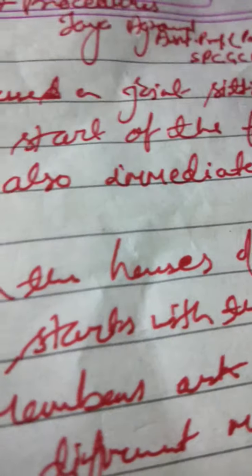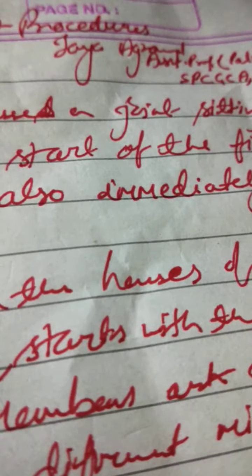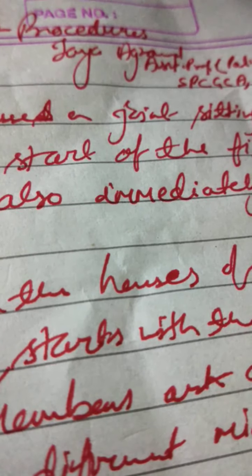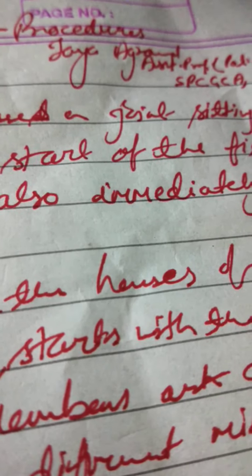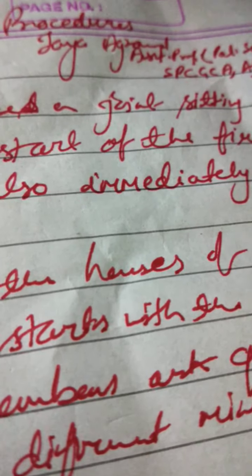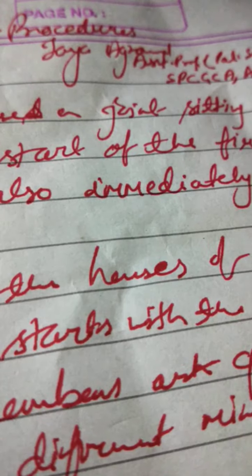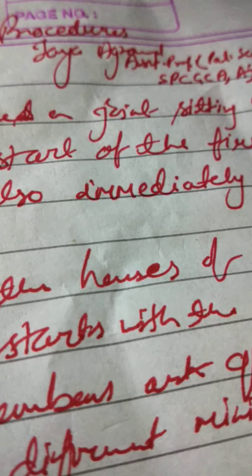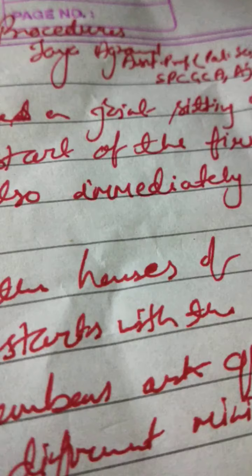The normal legislative business starts with the introduction of a bill in the house. The minister asks for leave of the house to move or present the bill, and when it is granted, states the contents of the bill and presents it for further discussion — this constitutes the first reading. A member other than a minister has to give a notice of intention to introduce the bill before asking for leave of the house. After introduction, the bill may be referred to a select committee before it is taken up for consideration.